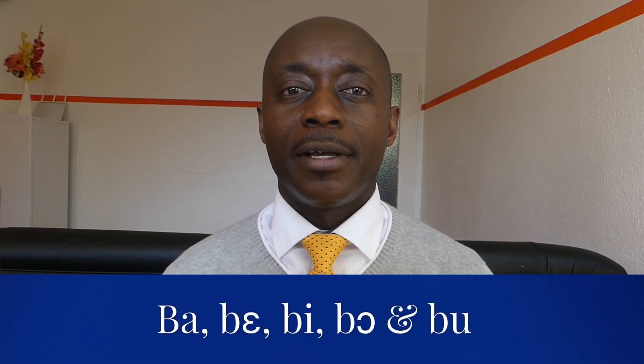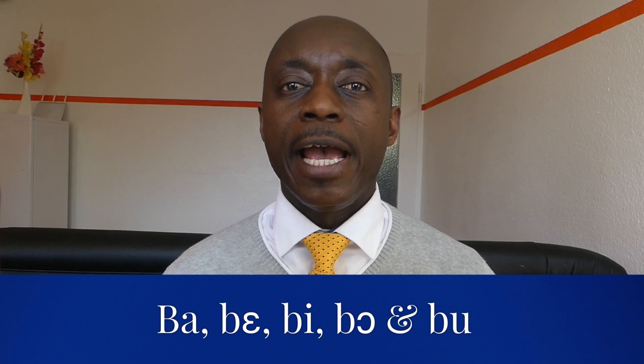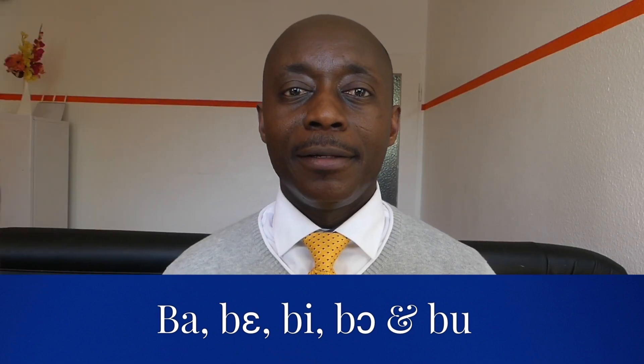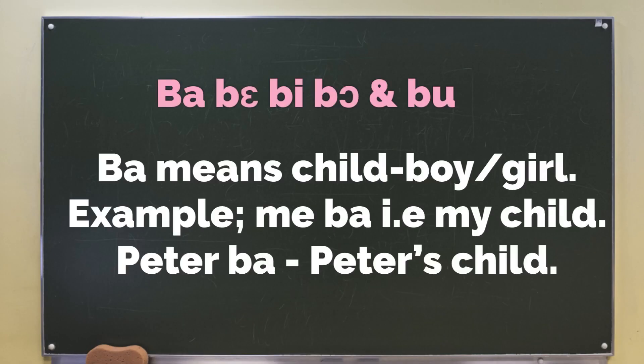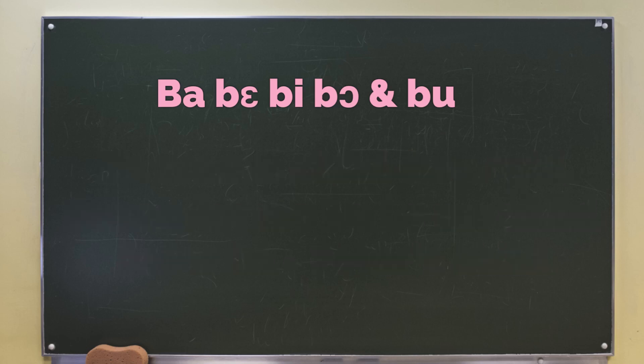Taking the first consonant, that is B, and matching it with the vowels, we will get the following five vocabularies. The first is BA — BA means child. It could be a boy or a girl. For example, MEBA means my child, and PETERBA means Peter's child. So we have BA, meaning child.